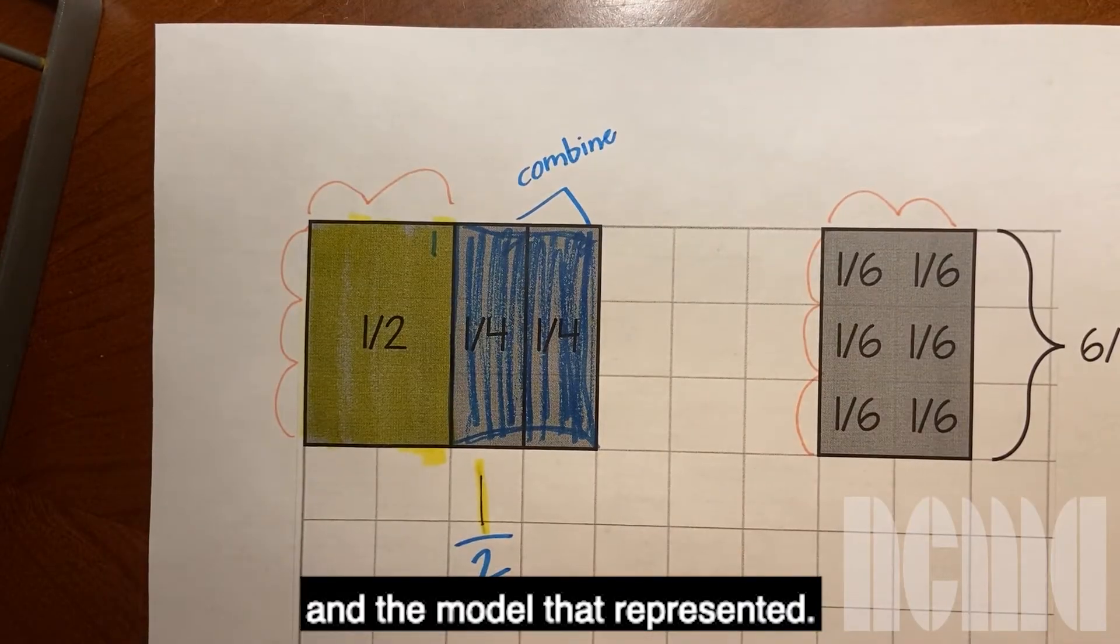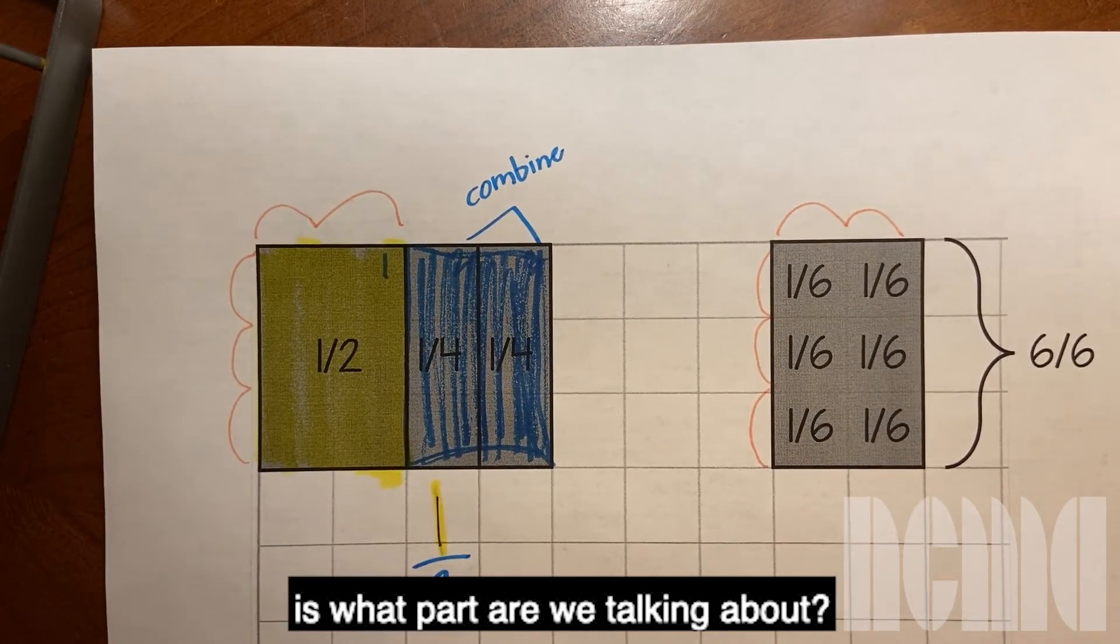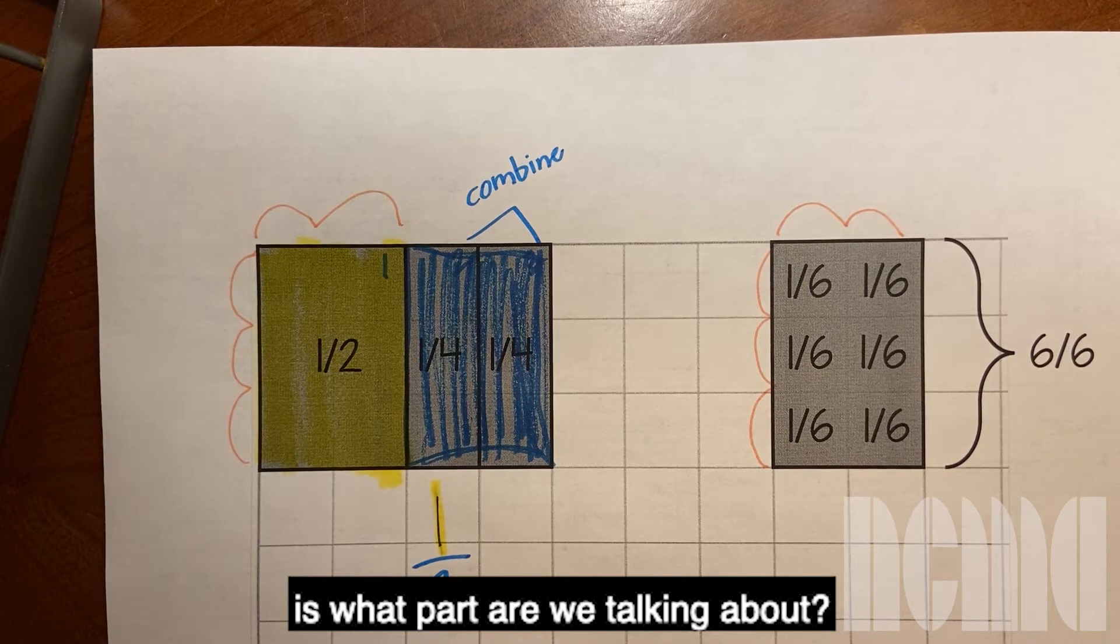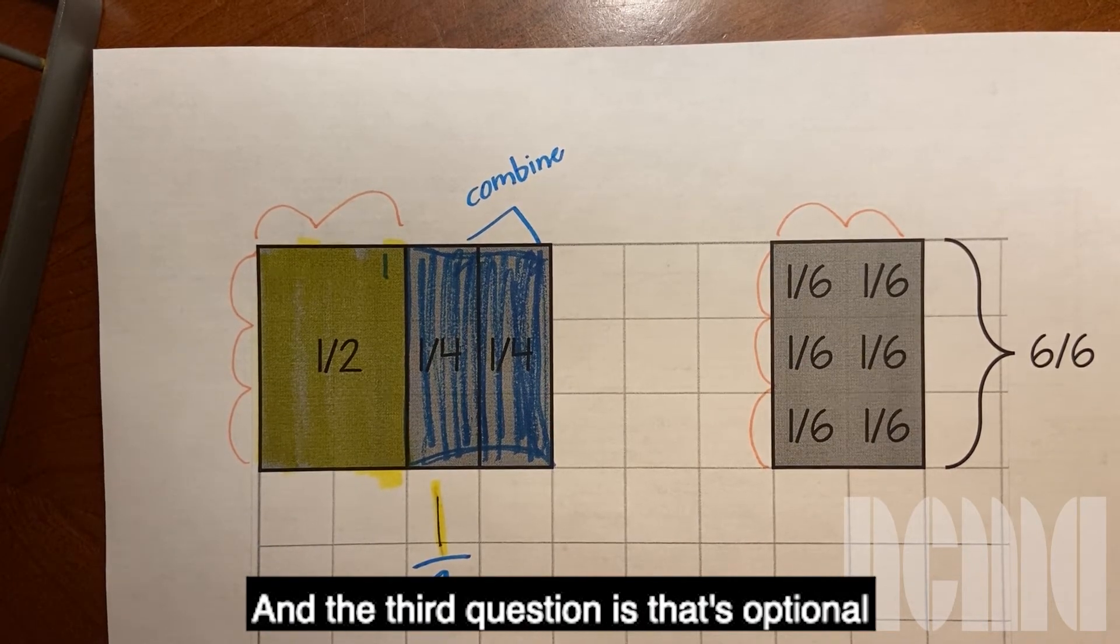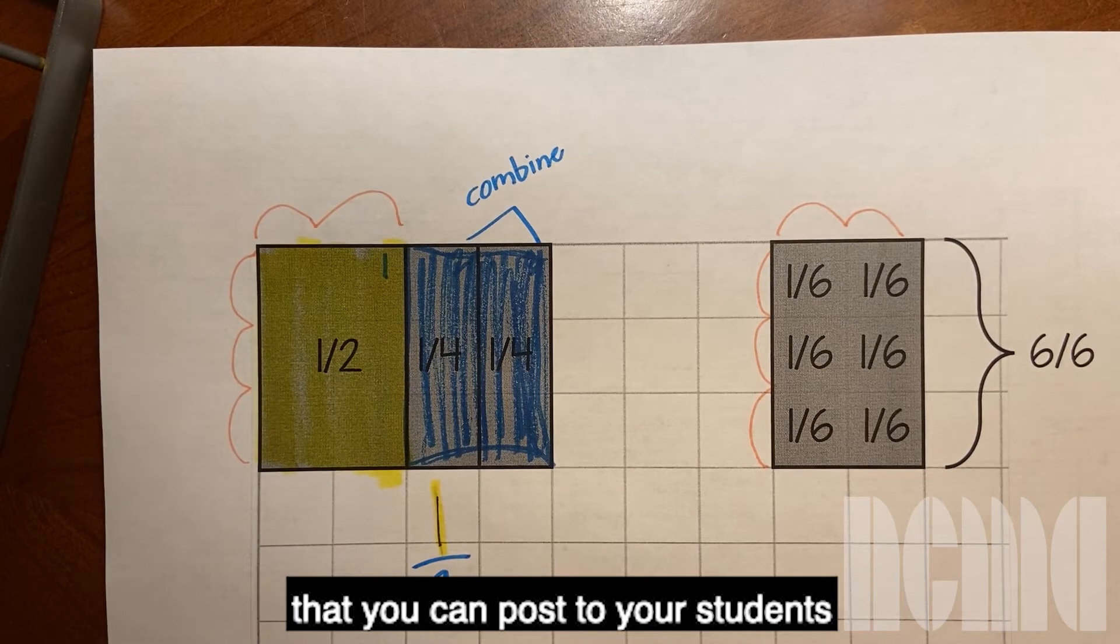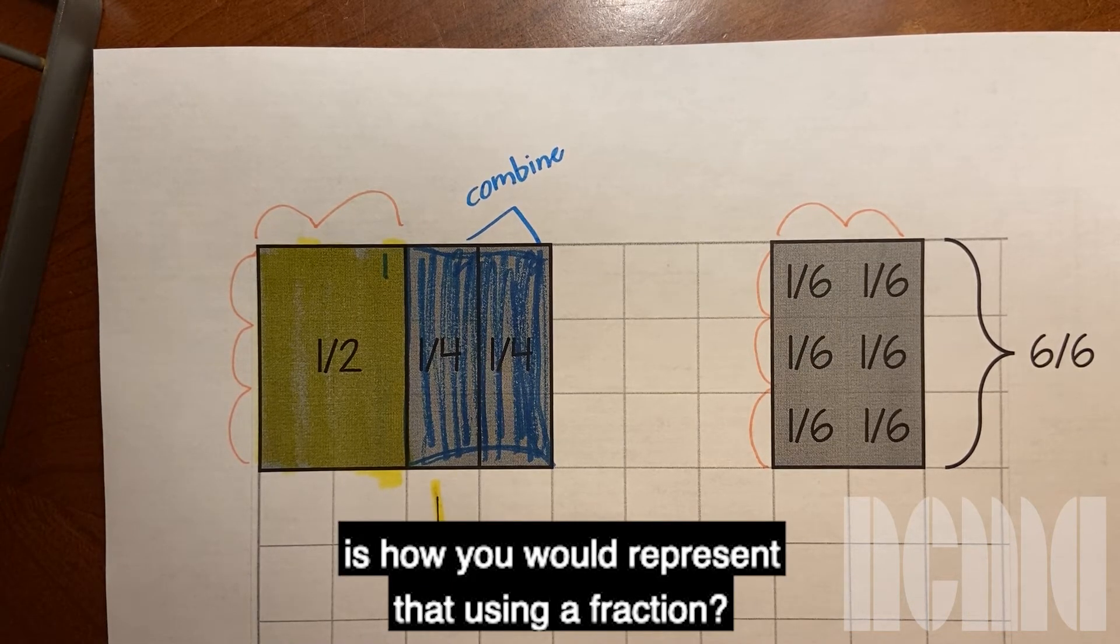You might want to use some colors so that they can have that connection between the various parts of your notation and the model that represented. So now let's do this same one. Remember the first question we're asking is what part are we talking about, the second question we're asking is how many total parts are there, and the third question that's optional that you can pose to your students is how would you represent that using a fraction.